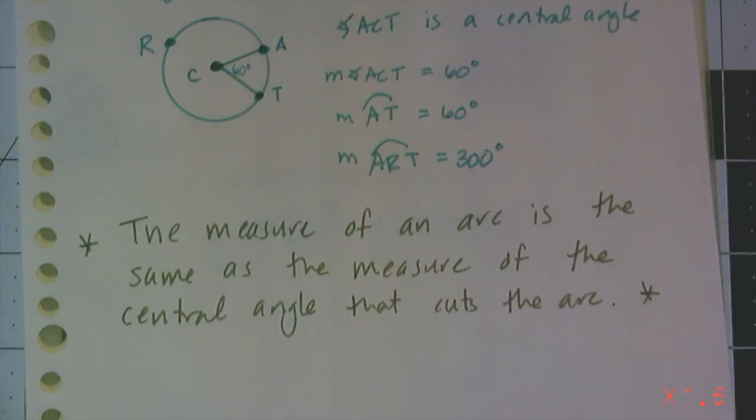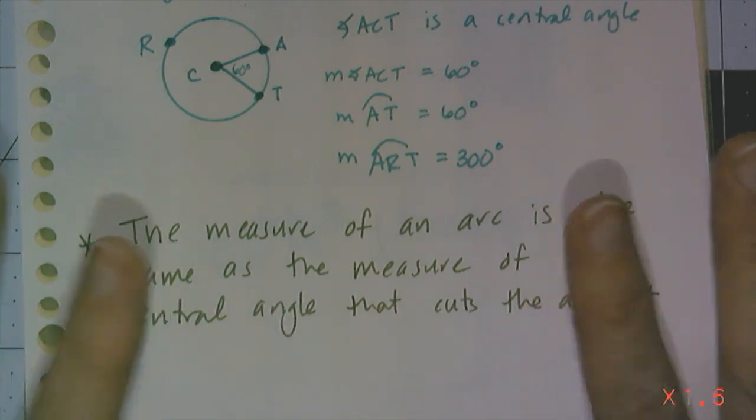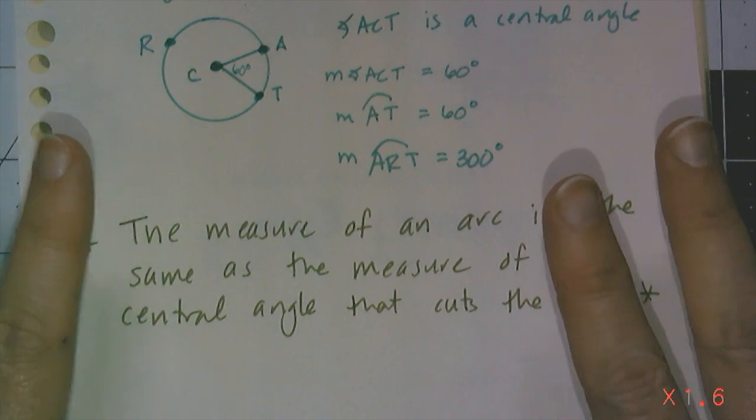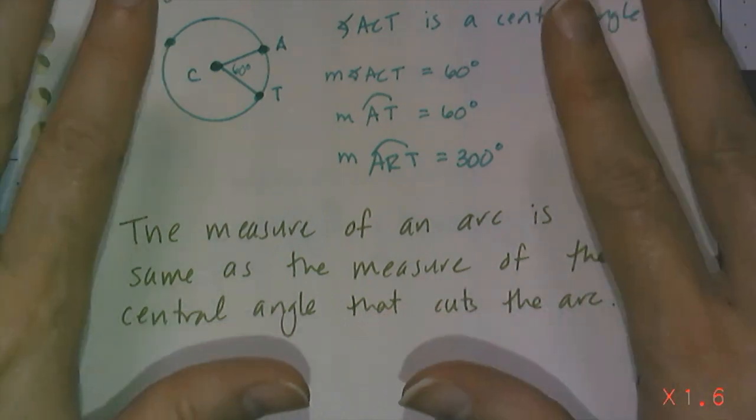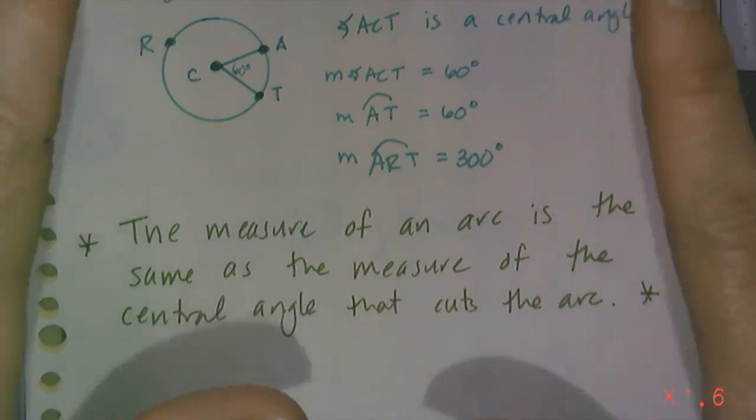Now when we get into circles, this is going to get a little bit more complicated, because we don't just look at the measure of an arc, later on we're going to look at the length of an arc. But for right now, measure of an arc is the same as the measure of the central angle that cuts that arc.